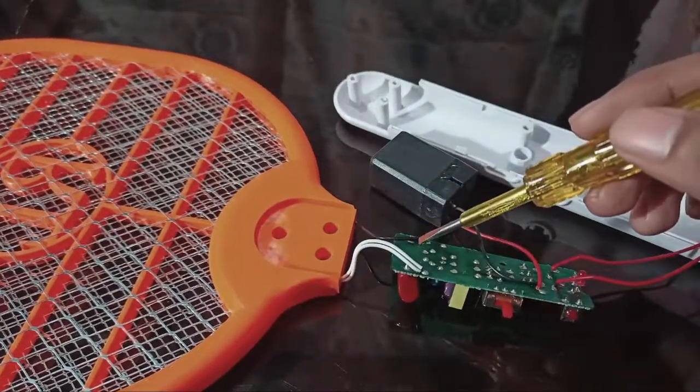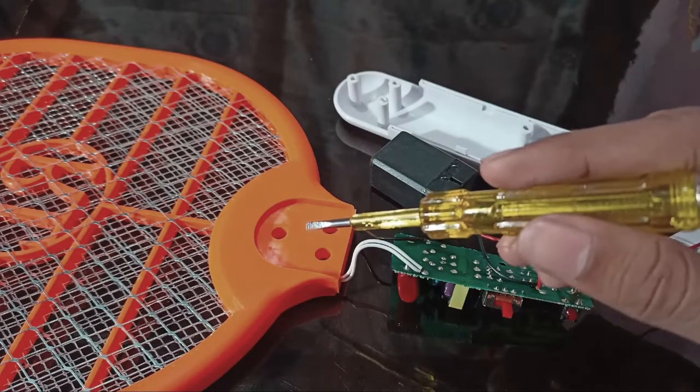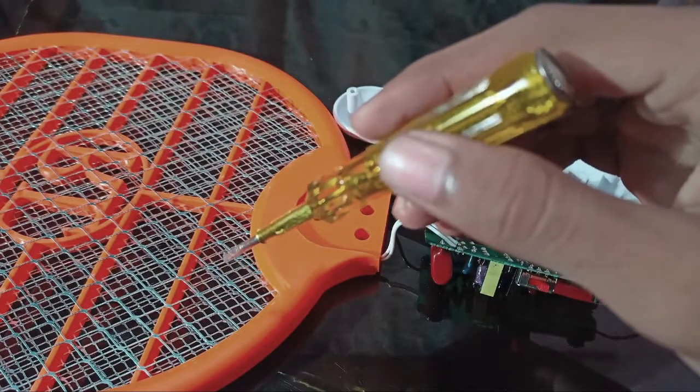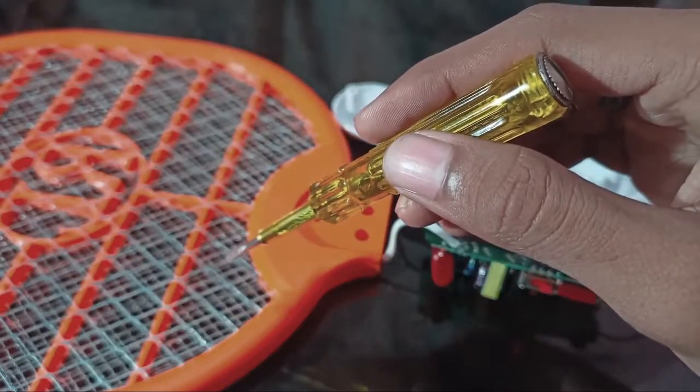When the mosquito comes in contact with the inner mesh and either of the two outer meshes, it completes the circuit and discharges the capacitor, passing a very high current through its body, and ultimately dies.